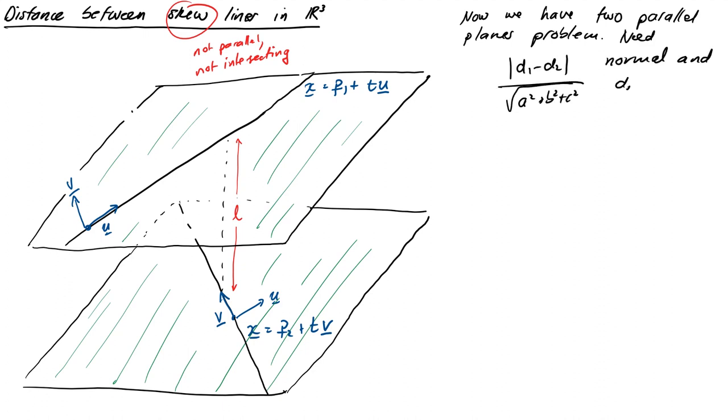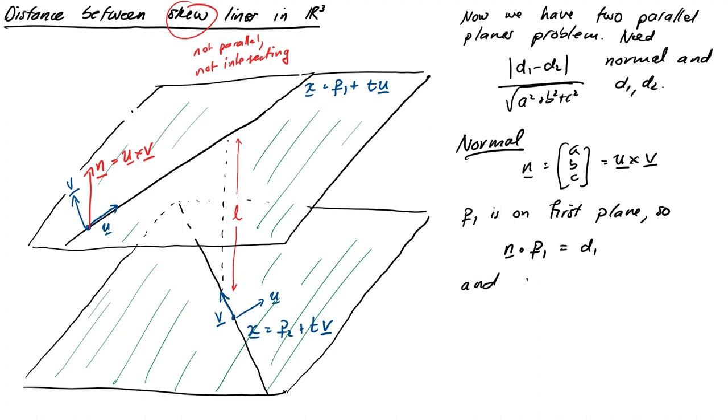Right, we need our normal. And we know those two direction vectors are going to be direction vectors for both planes. And so we can get our normal by just taking the cross product. So the normal is going to be U cross V. And we can get our D1 and our D2 by noting that P1 is on the first plane. So N dot P1 is equal to D1. And similarly P2 is on the second plane. So N dot P2 is equal to D2. At this point we've got everything we need. And we can go ahead and use our previous parallel plane solution to get the skew lines distance.